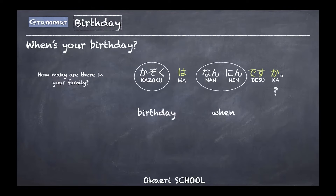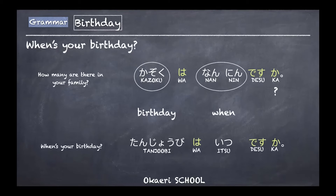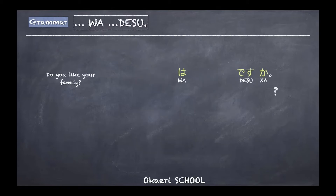The particle wa indicates that the word before it functions as the topic of the sentence — not necessarily the subject, but what you want to talk about. So for birthday: tanjoubi wa itsu desu ka — 'when's your birthday?' The basic structure is: topic + wa + information + desu + ka for questions.